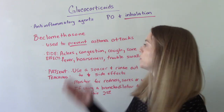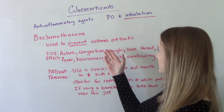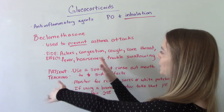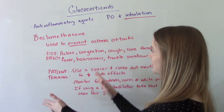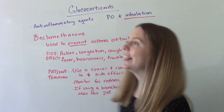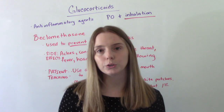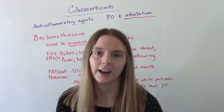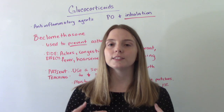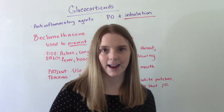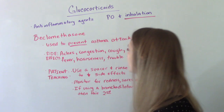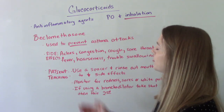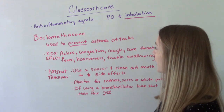So that's beclomethasone. It's used to prevent asthma attacks, and I underlined the word 'prevent' because I want to make this perfectly clear — it is not to be used during an asthma attack. This is used to prevent asthma attacks.